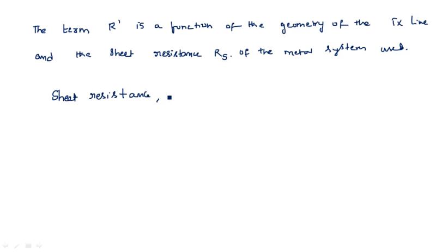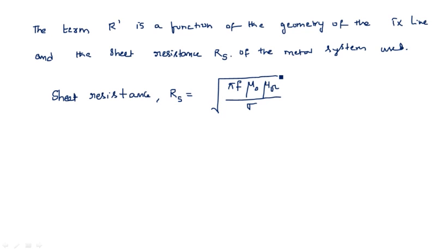The sheet resistance RS is equal to the square root of pi times F times mu naught times mu R divided by sigma. We can call this the radio frequency sheet resistance because we are working at radio frequencies. This RF sheet resistance is given as RS equals the square root of pi times F times mu naught times mu R divided by sigma.